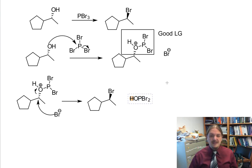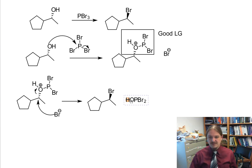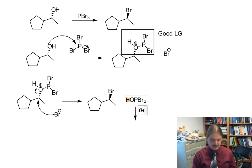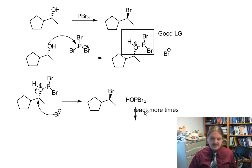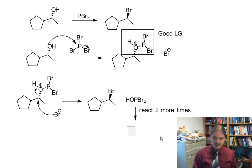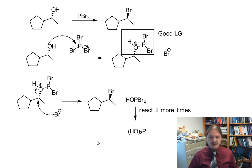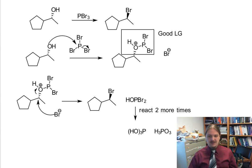The leftover from the phosphorus reagent is this dibromal phosphorous acid, which can react two more times, replacing all three bromines with OH groups. So now you have trihydroxyphosphorus, which is actually phosphorous acid.